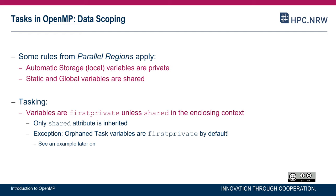Similarly, the rules with respect to static and global variables still apply — those are shared. A shared variable is a variable that is present only once; it's shared by all threads. And in the context of tasking, it is shared by all tasks.